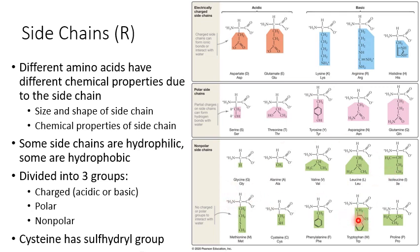The only exception among nonpolar amino acids is tryptophan, which has a nitrogen, but that nitrogen isn't quite enough to alter the polarity of the whole side chain. You don't need to know the individual amino acids or their names — you just need to know the three groups: charged, polar, and nonpolar. Charged ones have a charge on their side chain; polar ones have polar covalent bonds making the side chain polar; and nonpolar ones have nonpolar covalent bonds with equal electron sharing.